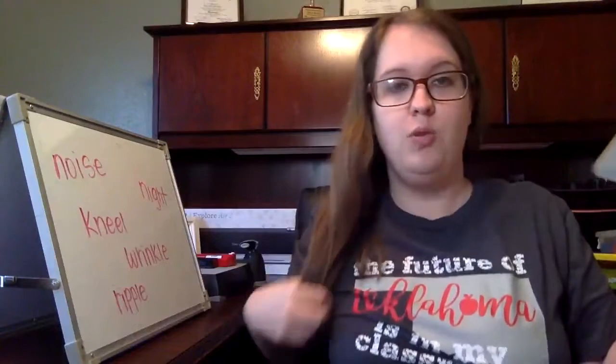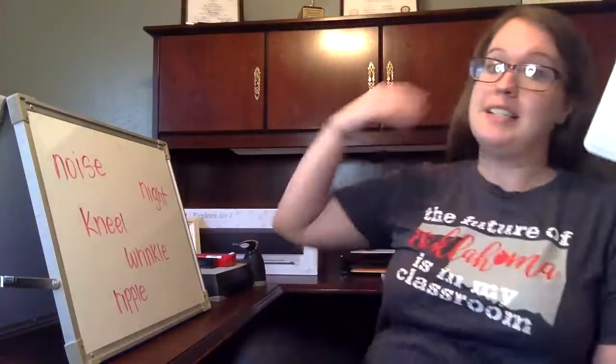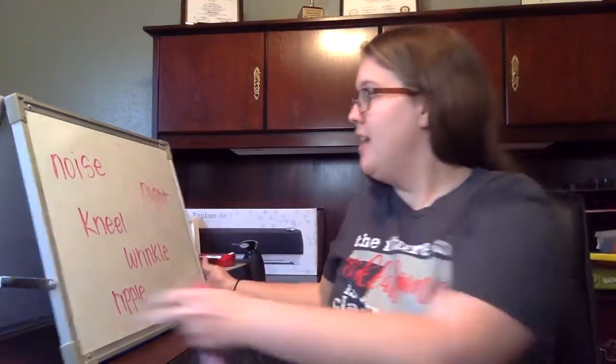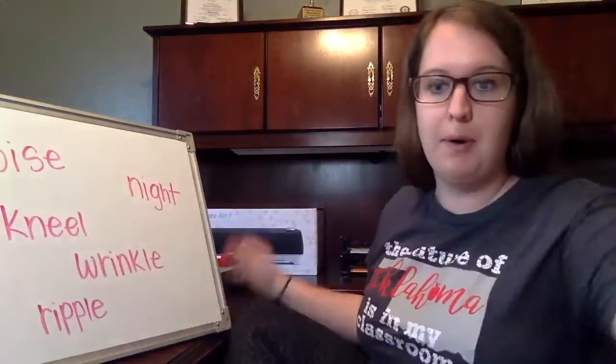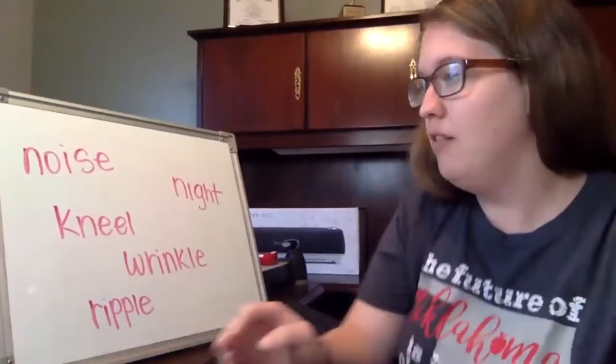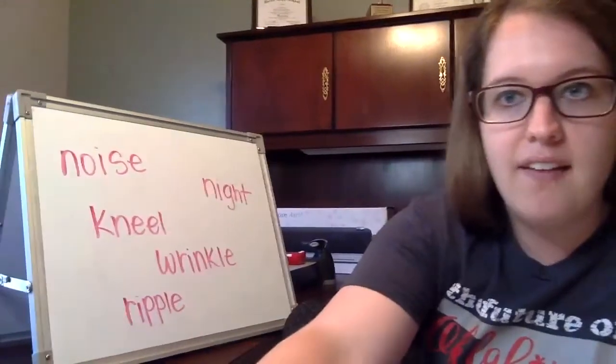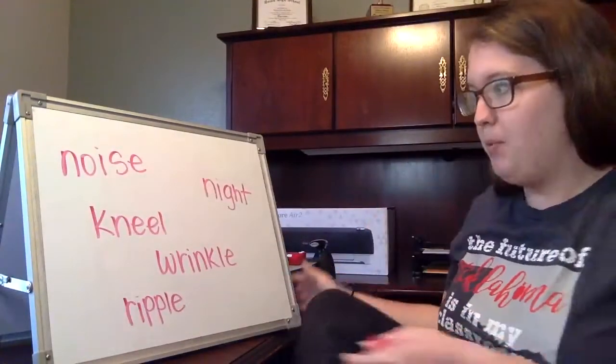Hey second grade, this is another lesson from our skills unit. This is a skill that we have been practicing the past couple weeks before all of this crazy online learning happened. The skill we're working on is putting things in ABC order, or alphabetical order. I've taken five words — we're gonna start small today and see what we remember — and I have these five words on my big whiteboard.